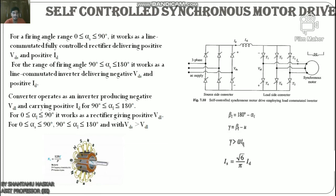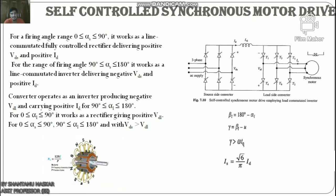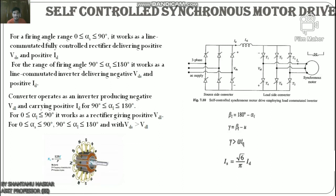If the commutation overlap of the thyristor under commutation is denoted by u, then the duration for which the thyristor is subjected to reverse bias after current through it has fallen to zero is given by γ = β1 − u. For successful commutation of the thyristor, γ > ω·tq, where tq is the turn-off time of the thyristor and ω is the frequency of motor voltage in radians per second. Since u is proportional to Id, for a given Id, β1 can be calculated such that the thyristor is reverse biased for a duration γ_min — just enough for commutation. This minimizes β1 and maximizes the motor power factor. Since γ is kept constant at γ_min, this control scheme is called constant margin angle control.